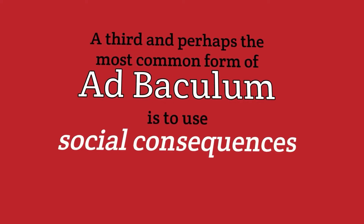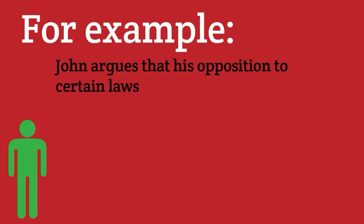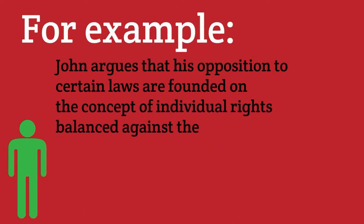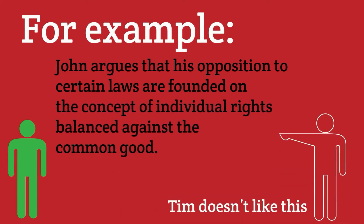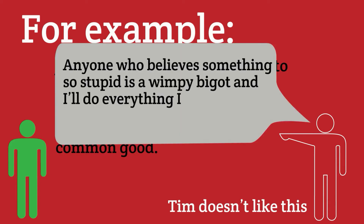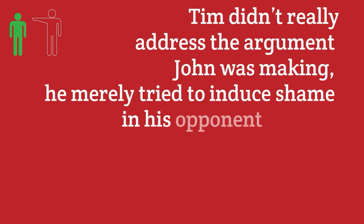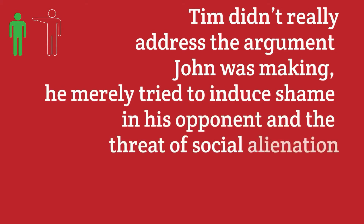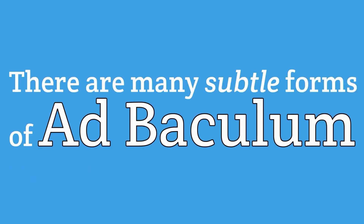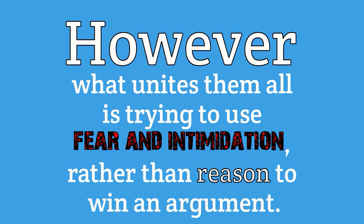A third and perhaps the most common form of ad baculum is to use social consequences as a means of getting an opponent to concede an argument. John argues that his opposition to certain laws is founded on the concept of individual rights balanced against the common good. Tim responds: 'Anyone who believes something so stupid is a wimpy bigot and I'll do everything I can to let everyone know that.' Tim didn't really address the argument; he merely tried to induce shame and the threat of social alienation. What unites all forms of ad baculum is trying to use fear and intimidation rather than reason to win an argument. Threats are not an argument.